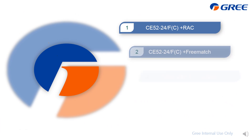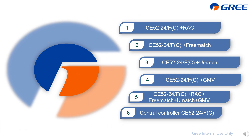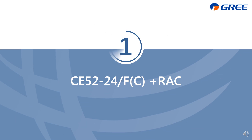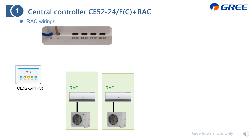According to the connected light commercial air conditioner type, I divide this into six parts. The first part covers central controller CE52 with residential air conditioner. This slide displays how to do the wiring from the central controller CE52 to the residential air conditioner.